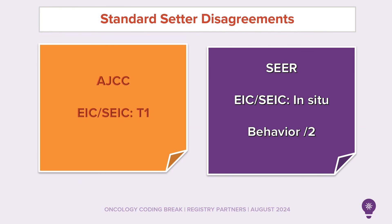Here is our major standard setter disagreement — keep this handy. We must always keep standard setter rules separate when assigning staging. AJCC says EIC and SEIC should be considered T1 invasive tumors, as up to two-thirds of serous EICs may be associated with extra-uterine disease. But SEER says EIC and SEIC are in situ and would have a behavior of slash 2.